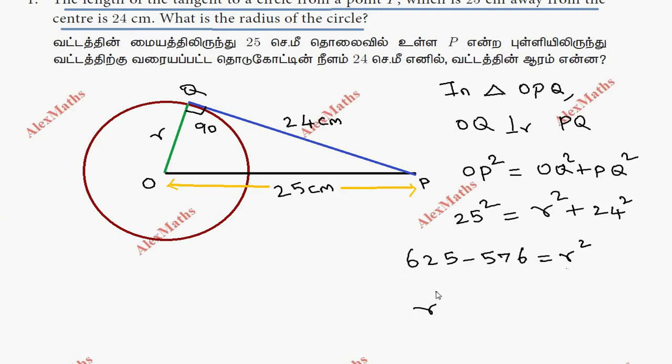So r squared is 49. R is the square root of 49, which is 7 cm.